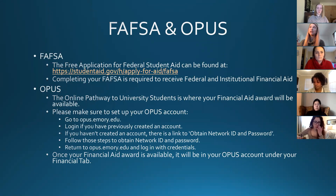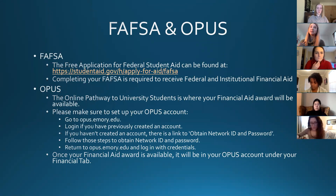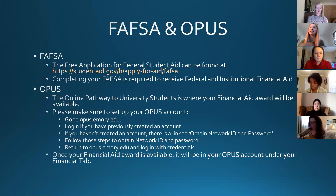When you get to OPUS, log in if you've already created an account. If not, click the link that says 'Obtain Net ID and Password' and follow those steps. Those credentials are also the same ones you'll use to access your Emory University email. Once financial aid is available, it lives in your OPUS account under your Student Financials tab.